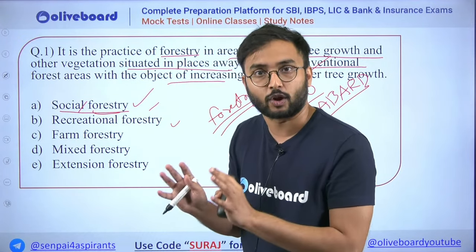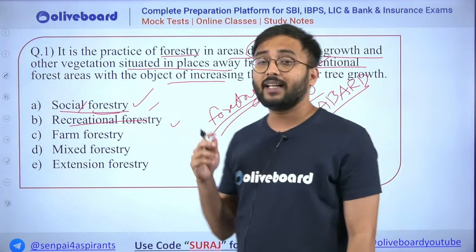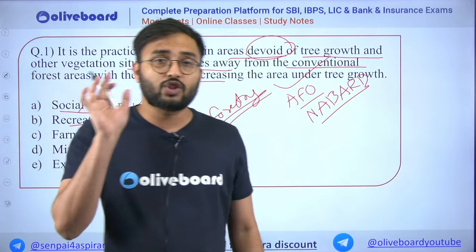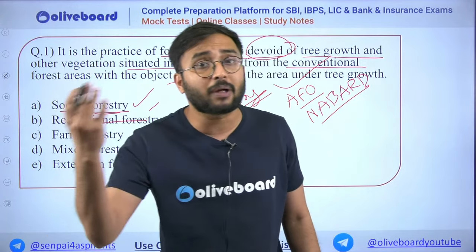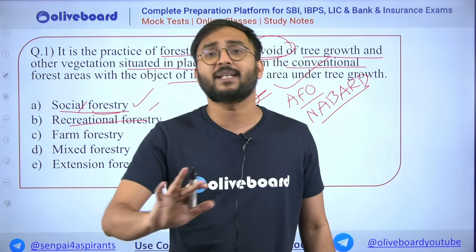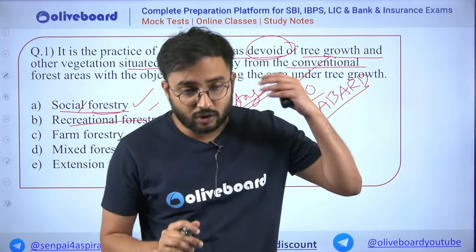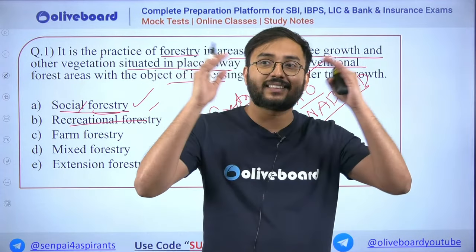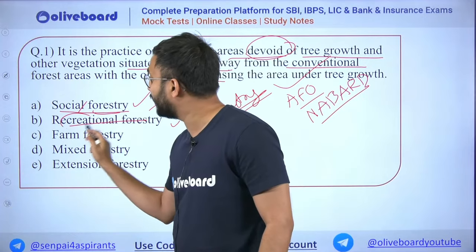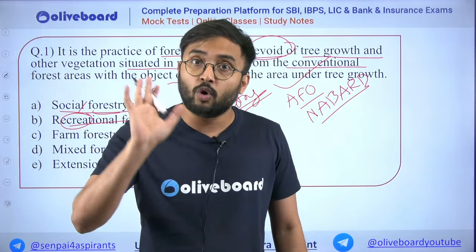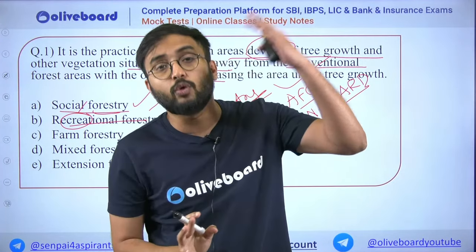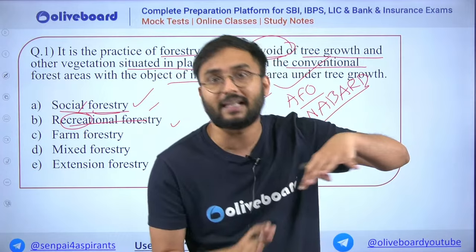Recreational forestry covers national parks, wildlife sanctuaries — forests where people go for tourism, bird watching, zoos, national parks, sightseeing, and scenic beauty. Tourism activities, natural and scenic beauty activities, as well as biodiversity, flora, and fauna activities all come under recreational forestry.